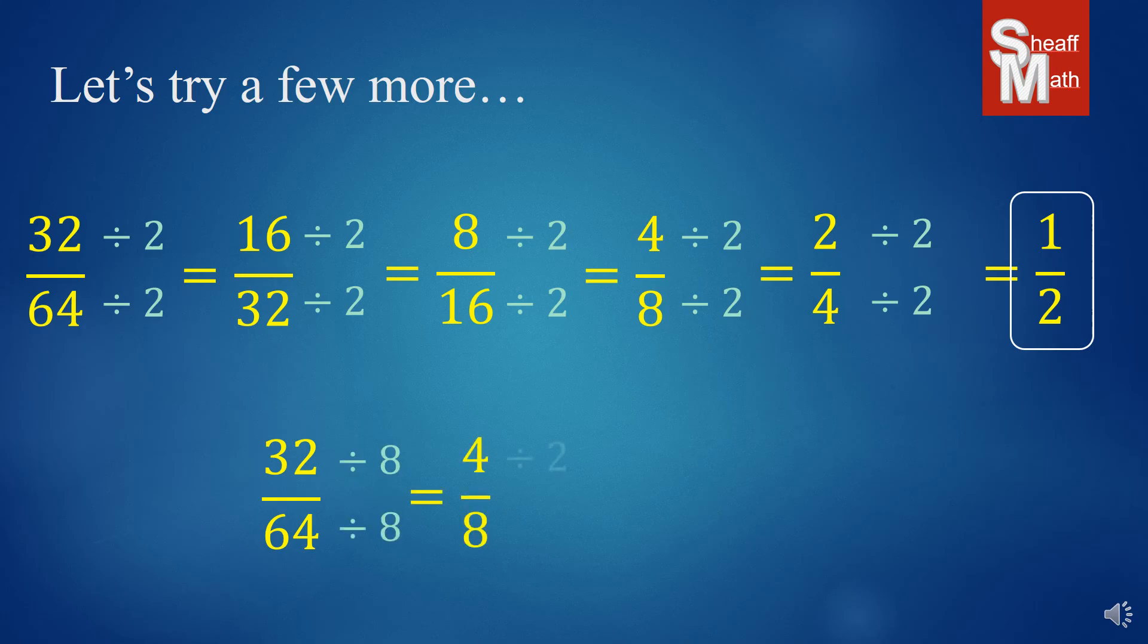Started dividing by two again. Let's just say that's the way I did it. And I got one half. Well, I shortened the process. You could have actually divided by 32 and done it in one step.